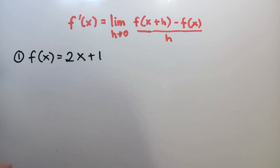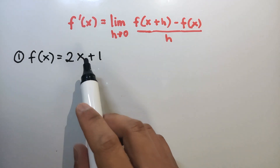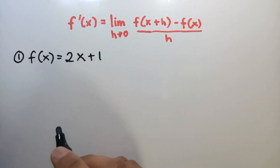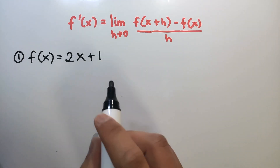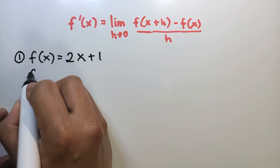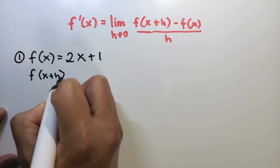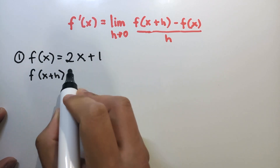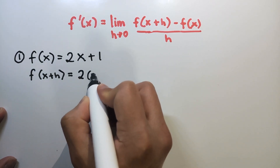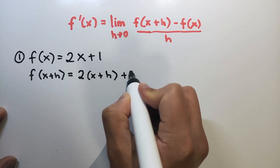Given the function f of x equals 2x plus 1, our goal is to find the derivative using this formula. So the first step is to find f of x plus h, which simply means substitute x plus h for x. So that's 2 times x plus h, plus 1.